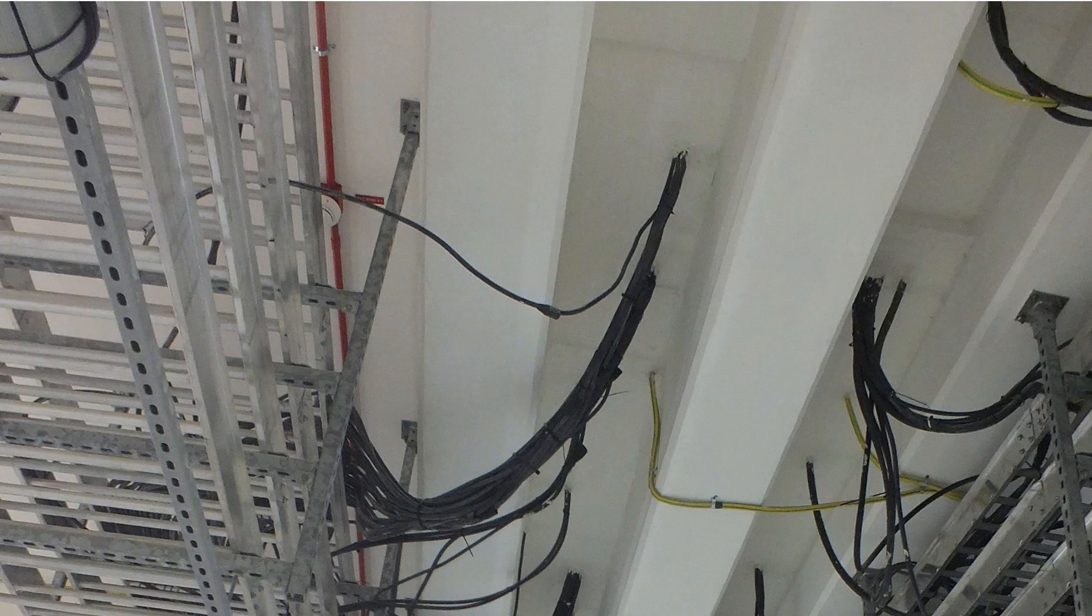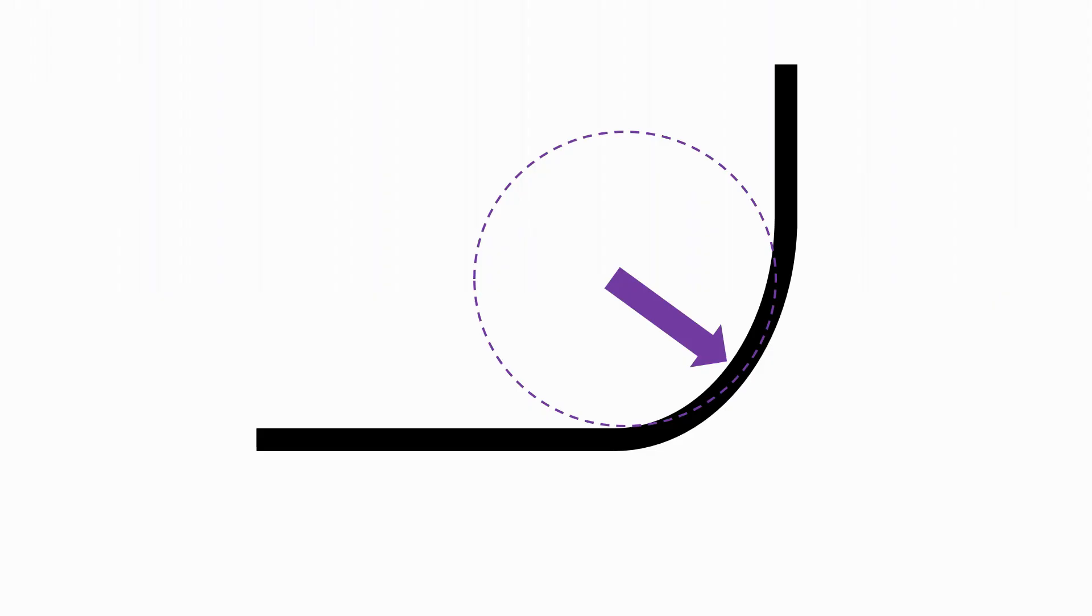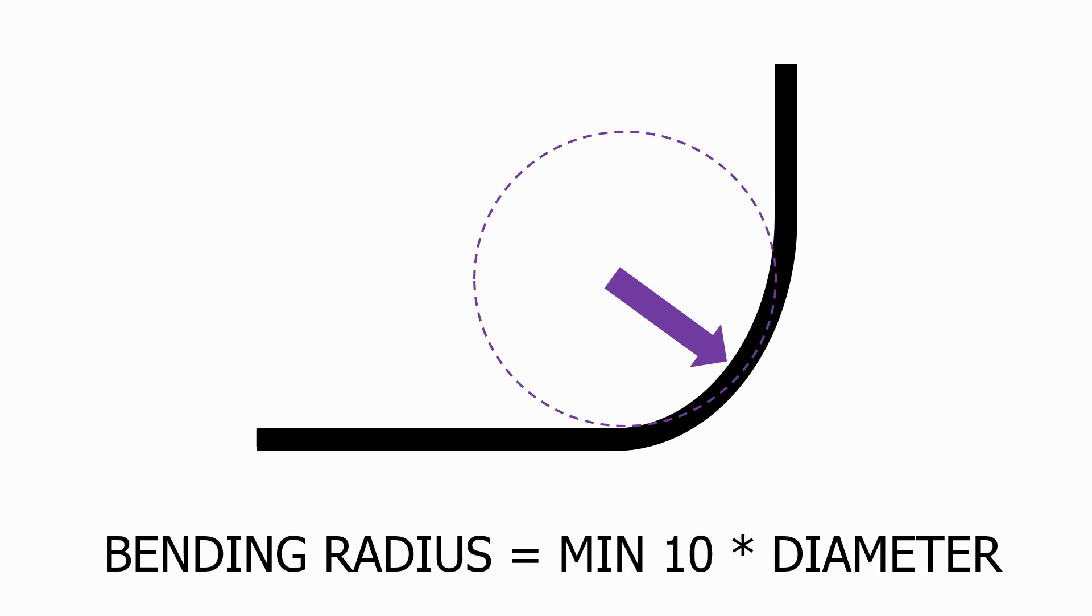When we're designing the cable tray system we need to ensure that we don't put the cable tray too close to the bottom of the panel as we need to consider the bending radius for all of the cables involved. This is defined by the manufacturer and the minimum distance that we need from the cable tray to the bottom of the gland plate will be defined by the cable that has the largest bending radius.